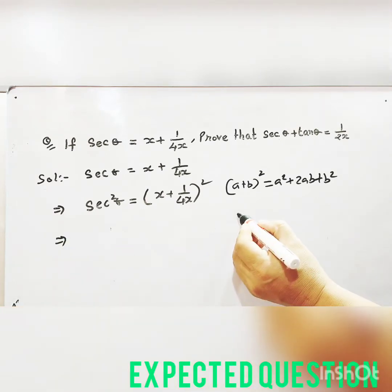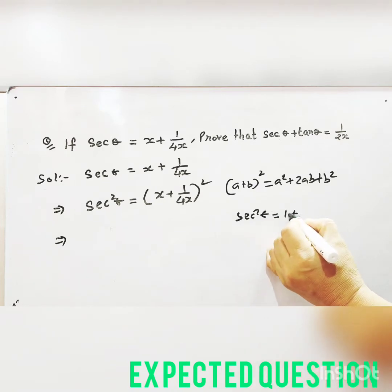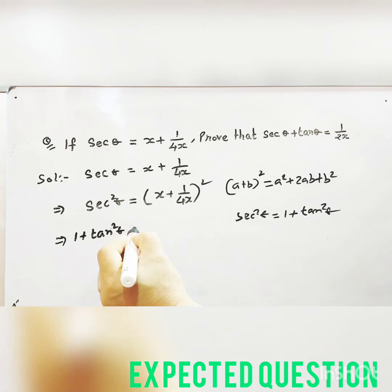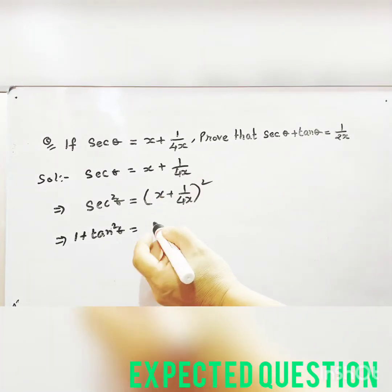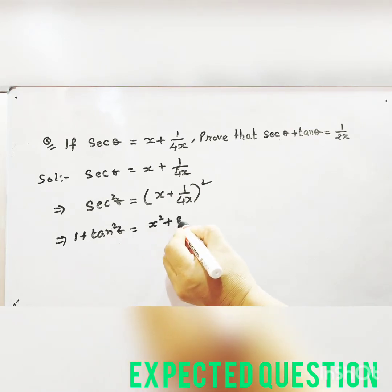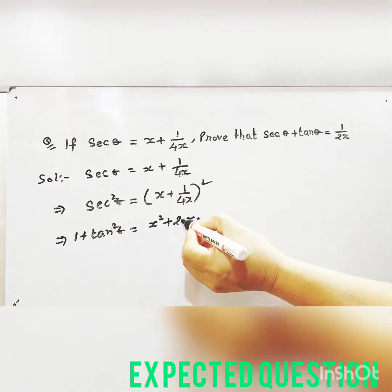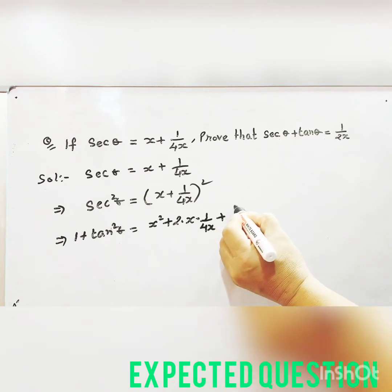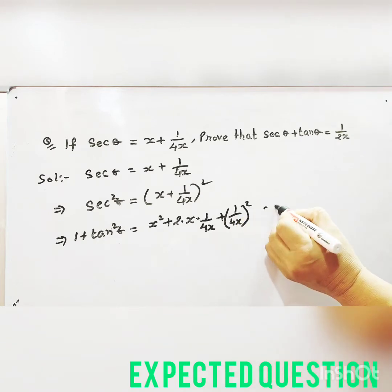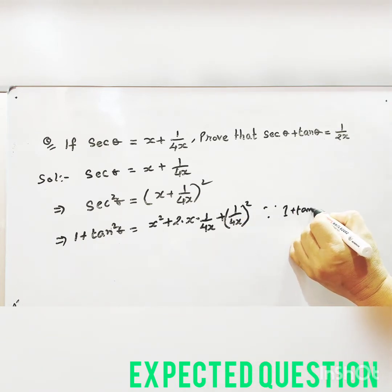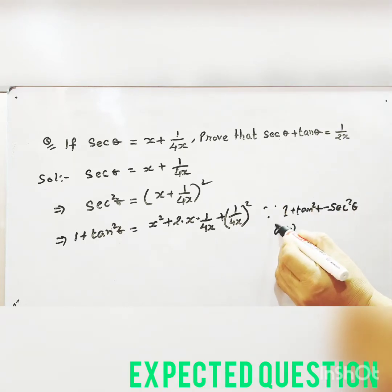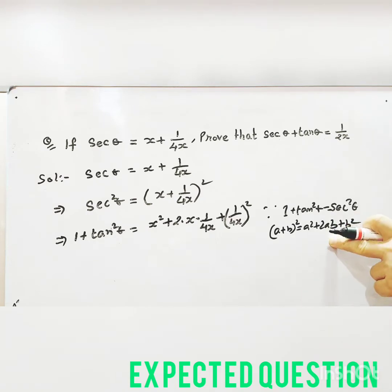Here we have sec square theta, which equals 1 plus tan square theta. So we have to use that: 1 plus tan square theta, applying the a plus b whole square expansion: a squared plus 2ab plus b squared. We get both tan theta and sec theta this way.